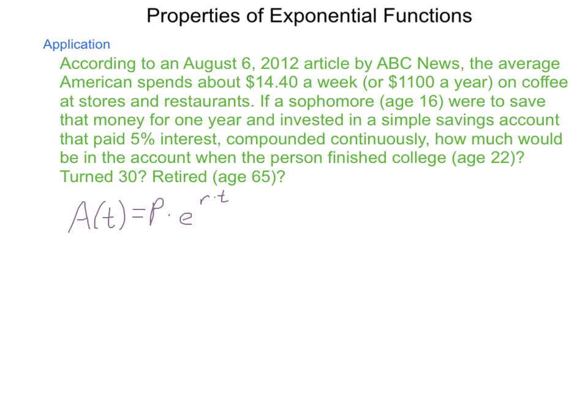So, in our situation here, we have P equaling $1,100, E is its own value, our rate of 5%, translated into decimal, is five hundredths, and our time is going to be 6 years, 14 years, and 49 years. We're going to run three different situations.